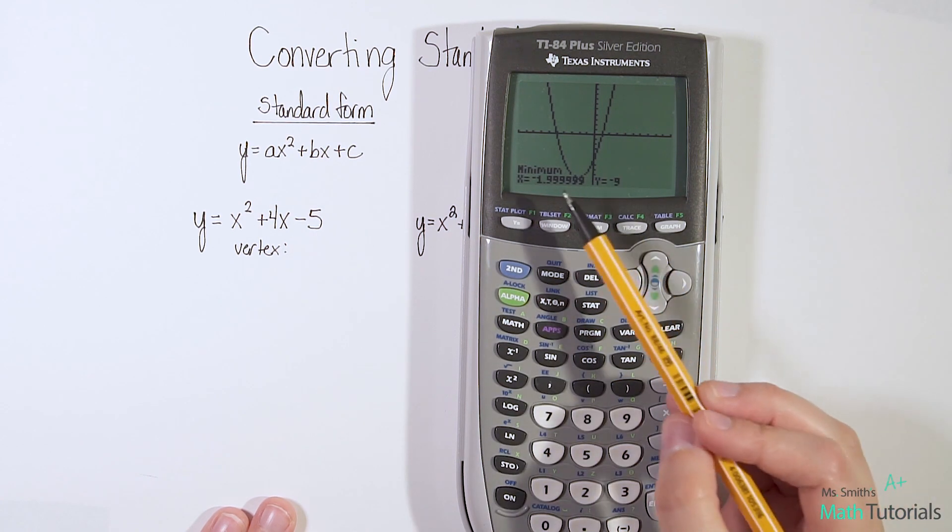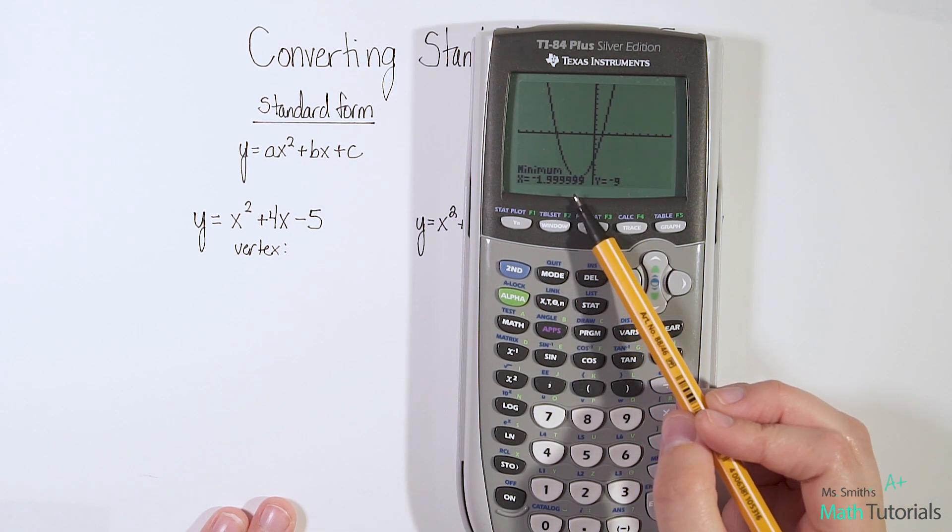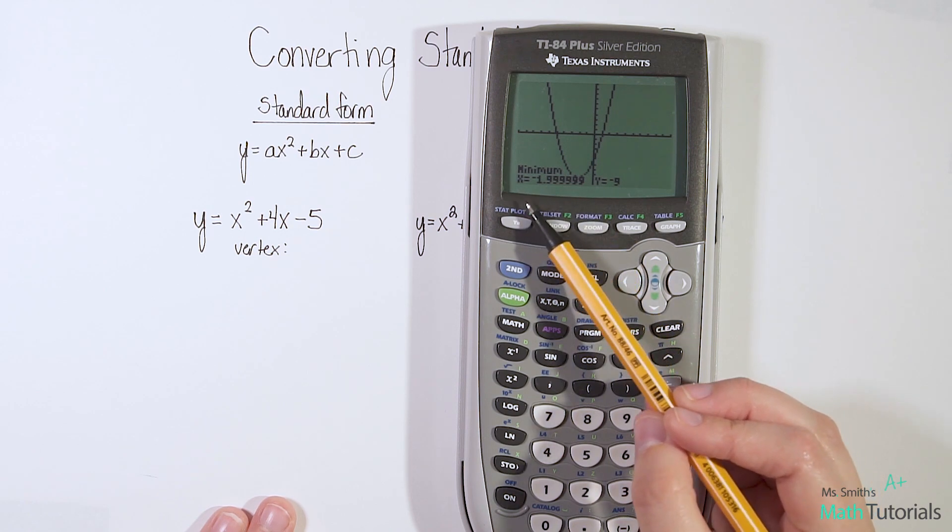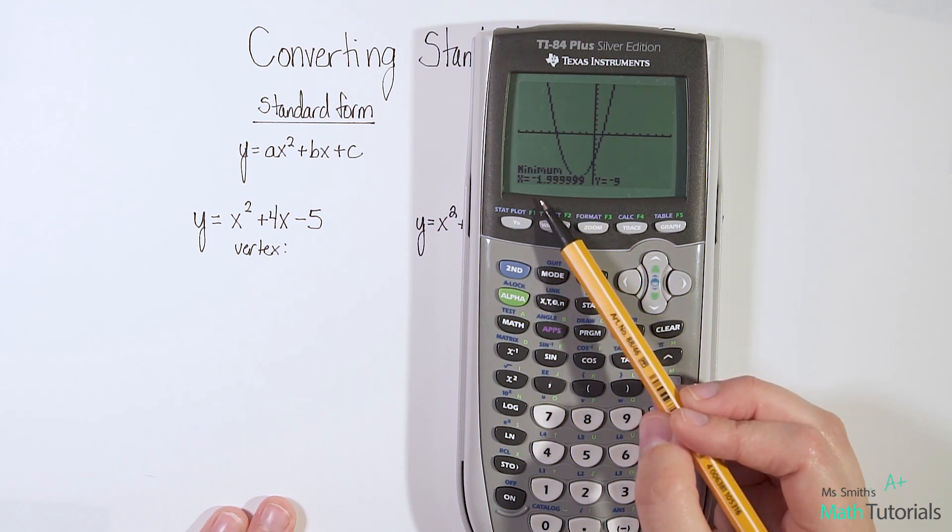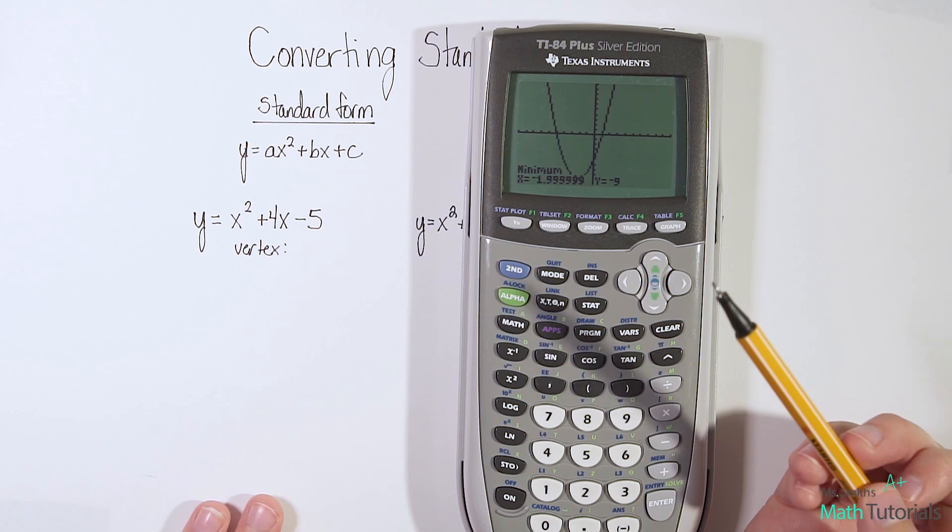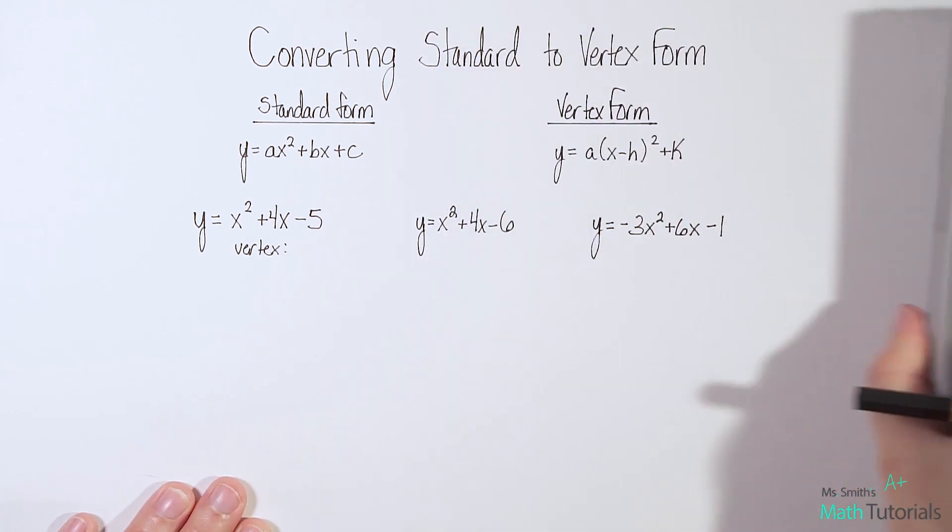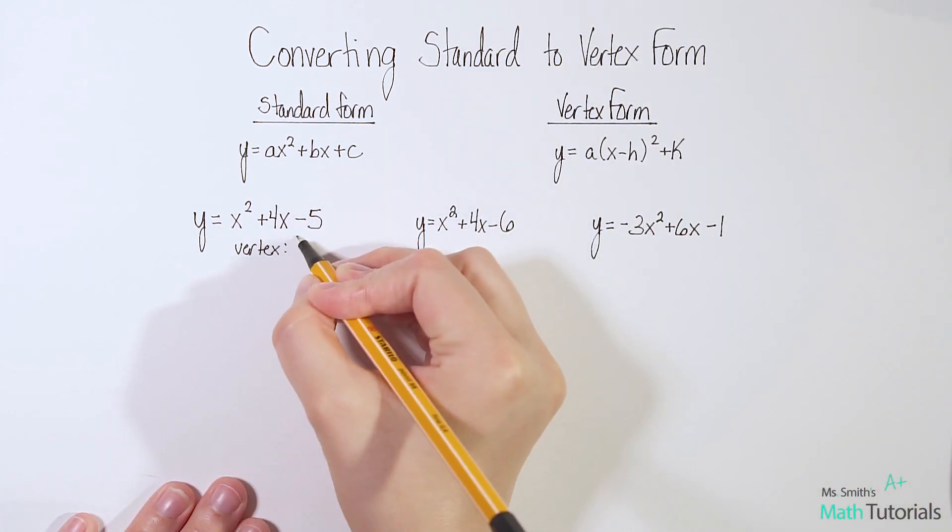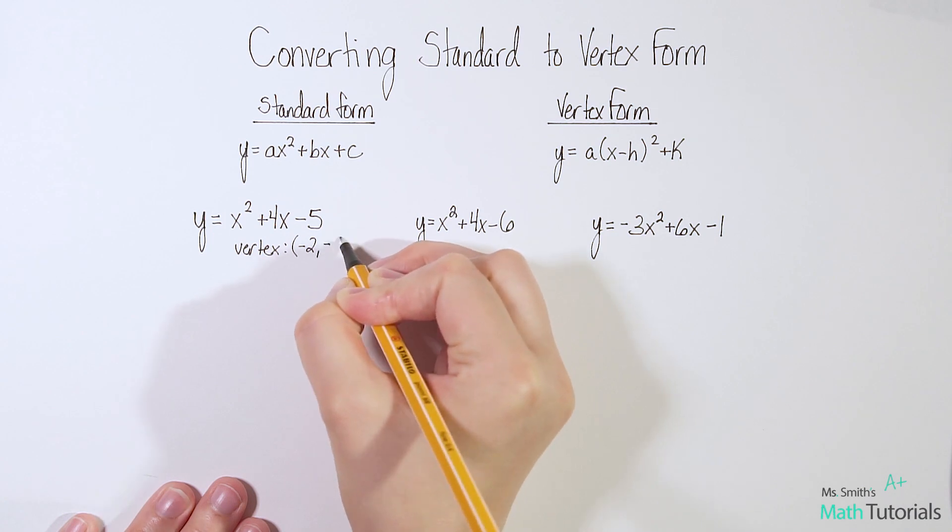So the vertex here, it says negative 1.99999. We do round that up, so we would say the vertex is negative 2 comma negative 9. So our vertex is negative 2 comma negative 9.